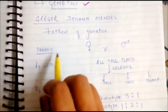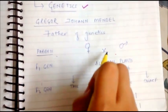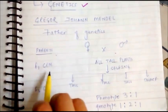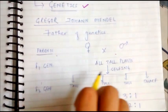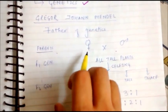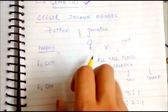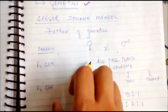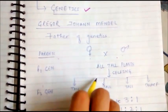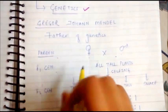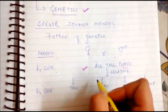In a monohybrid cross, when we take tall and dwarf plants as parents, we know that tall is the dominant trait and dwarf is the recessive trait. In the F1 generation, we get all tall plants.